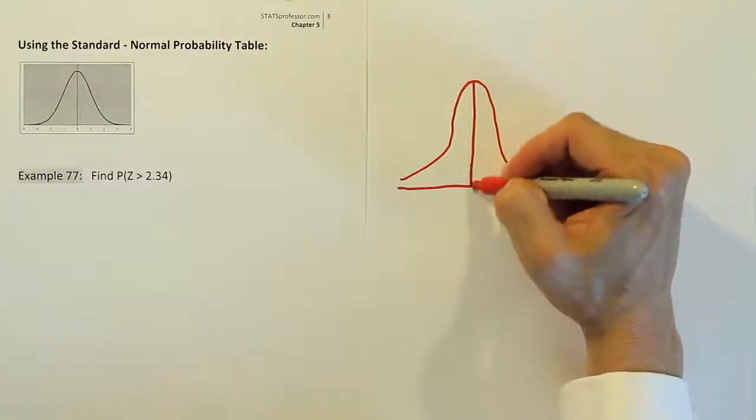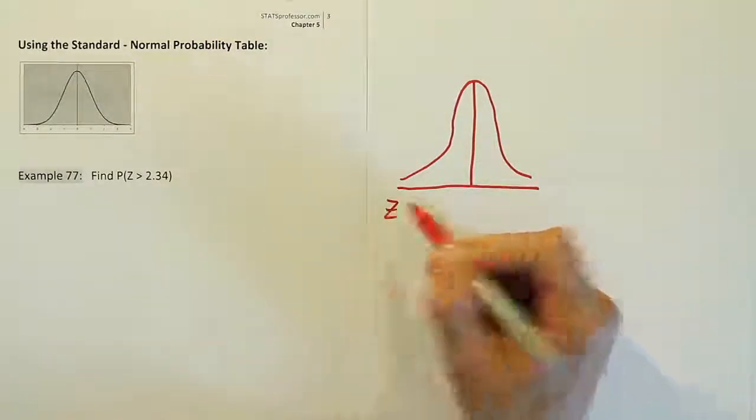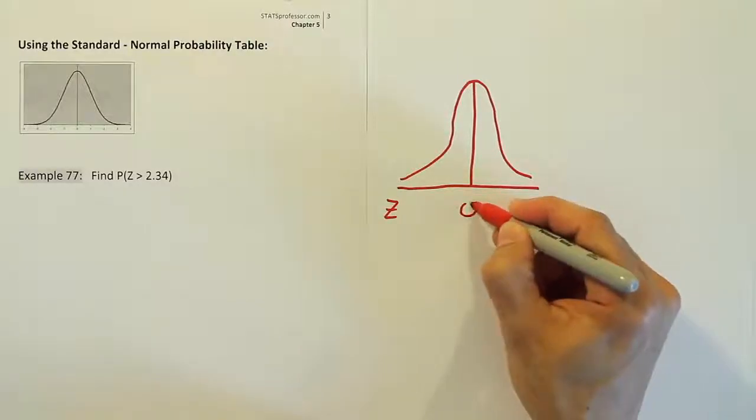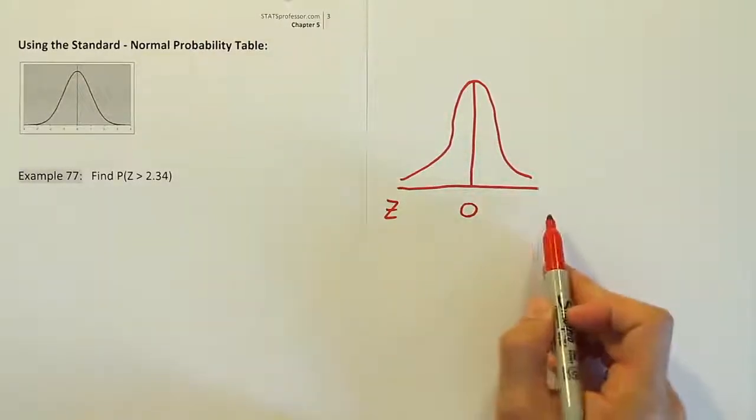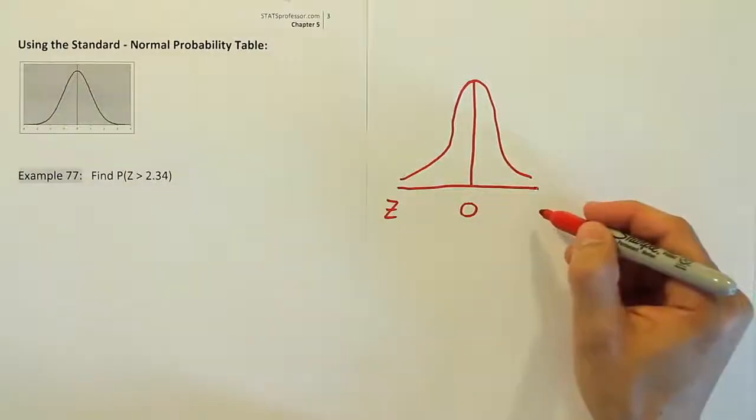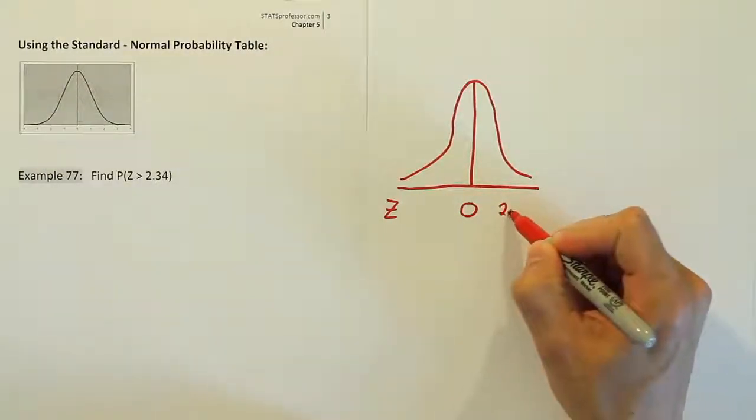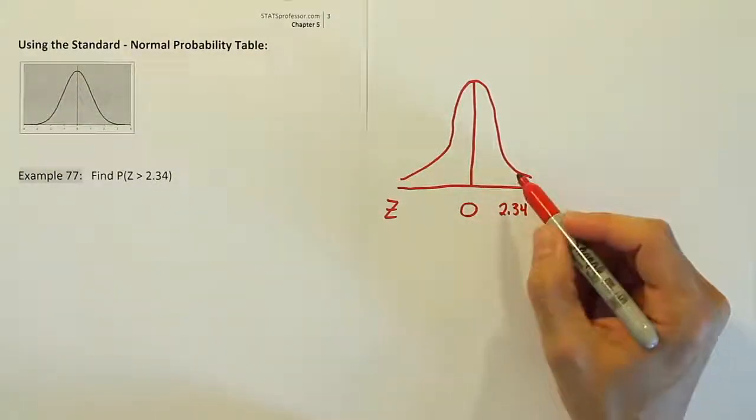Once I have my drawing done, I'm going to label the center at zero. Now with this number line, I'm going to figure out where this 2.34 is on the number line. I think it's to the right because obviously 2.34 is greater than zero.